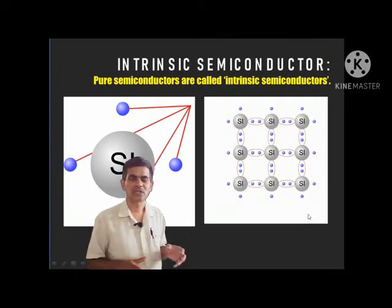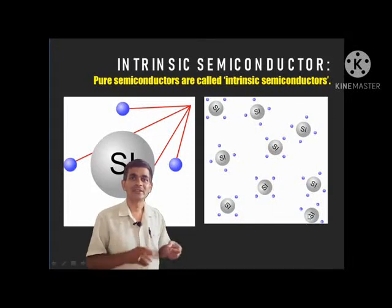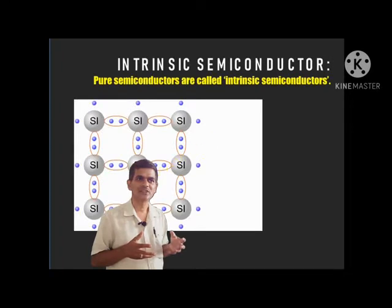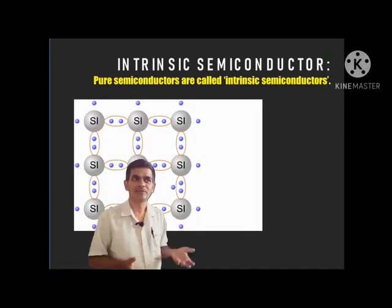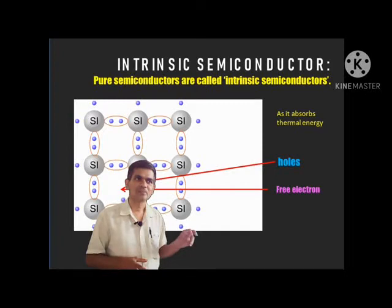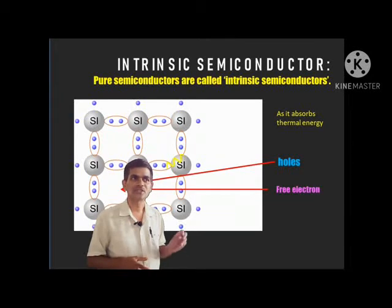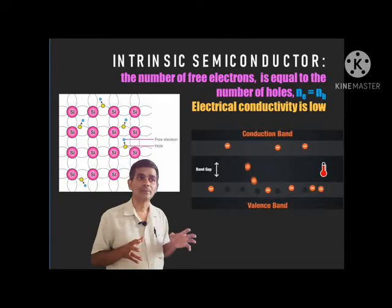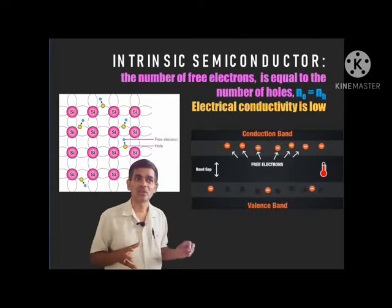At low temperature, there are no free electrons. Because of that reason, they behave like an insulator at zero Kelvin. But as the temperature increases, as the material absorbs some thermal energy, some of these electrons become free by breaking covalent bonds. As a result, as electrons become free, a vacancy is created and that vacancy is called a hole — it is positively charged. The free electrons are negatively charged carriers.